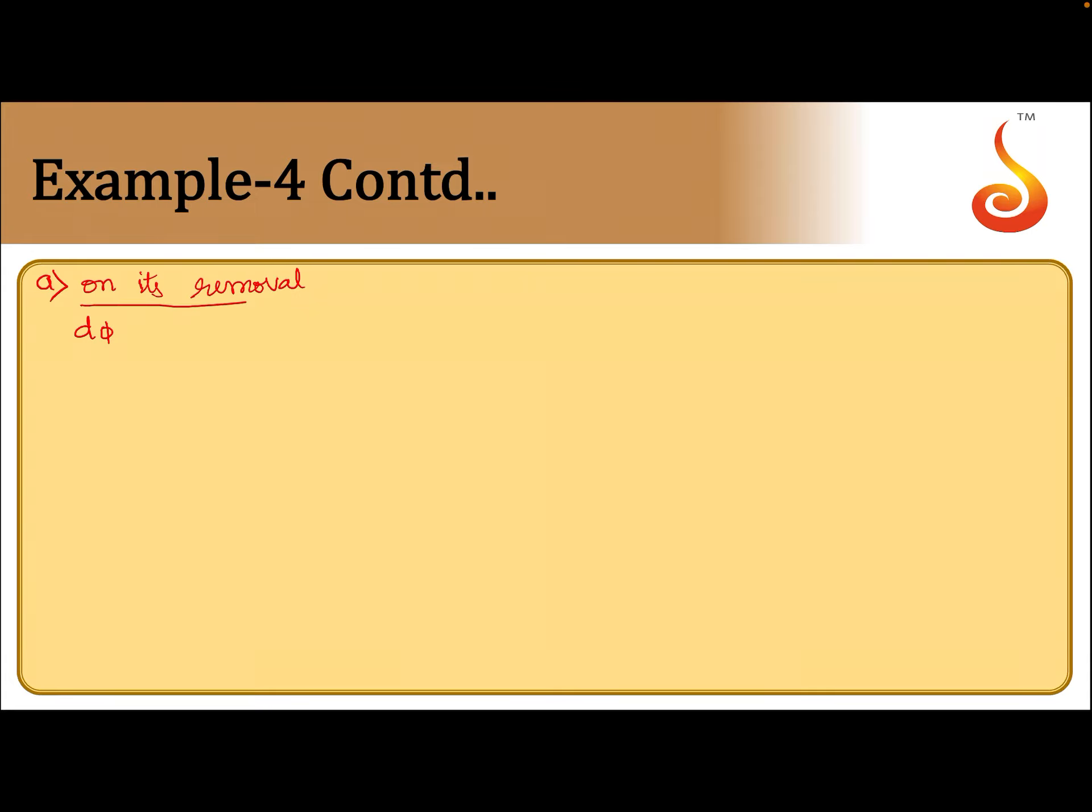So change in flux is what? Originally there is flux B A N. Finally it is removed, so it is 0. So B is 1, area is 0.5 square, number of turns is 50, that will be 12.5 weber.